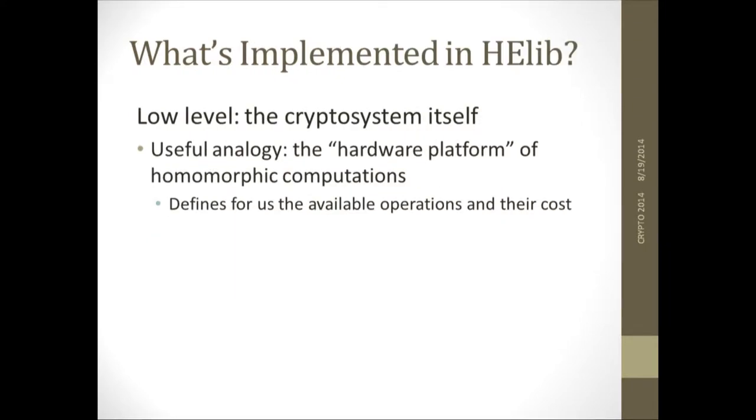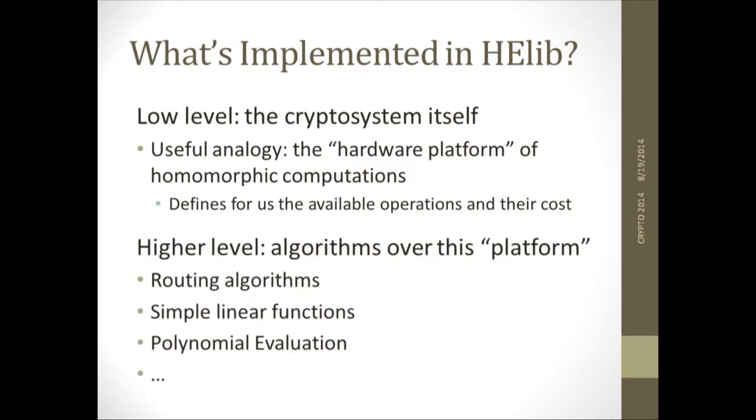What's implemented there? HElib has two levels. On the bottom level is the implementation of the crypto system itself. As Rafi said in the previous talk, a crypto system has encryption, decryption, evaluation, that kind of thing. This is what's implemented in the lower level of HElib. A useful analogy to think of HElib is it gives you the equivalent of a hardware platform. It tells you what are the quantities that you can operate on homomorphically, what operations you can apply to them, and how much these operations cost. In that sense, it sort of gives you a platform to work on.